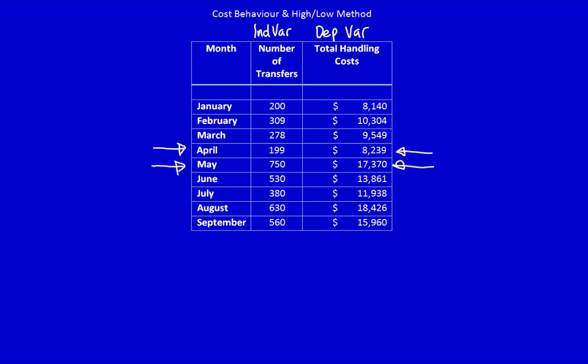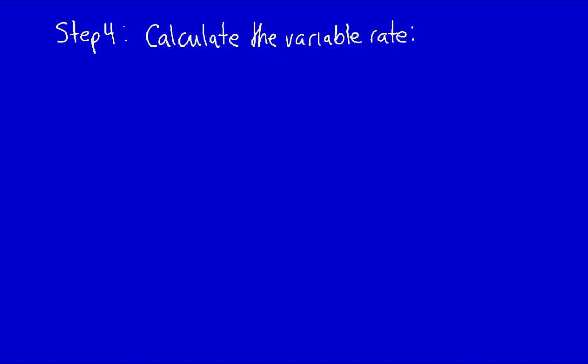Step 4: Calculate the variable rate per unit using the information obtained. What is the formula? The formula is variable rate is equal to the high point in dollars minus the low point in dollars divided by the high point in driver minus the low point in driver. CD, by the way, is cost driver.